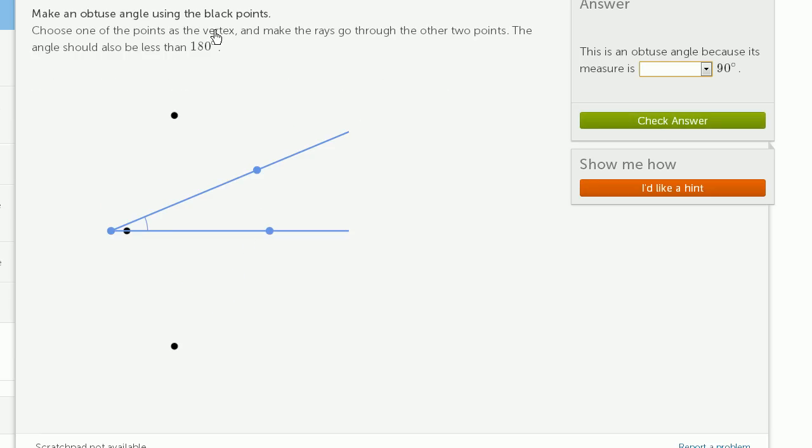Make an obtuse angle using the black points. Choose one of the points as the vertex and make the rays go through the other two points. The angle should also be less than 180 degrees. So you could think of it several ways.